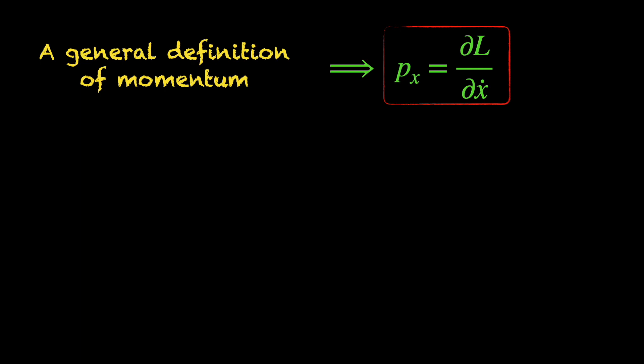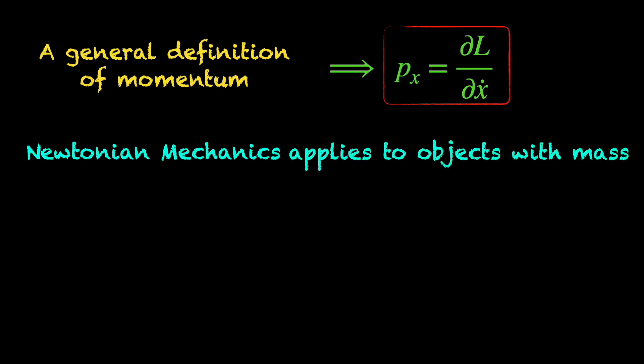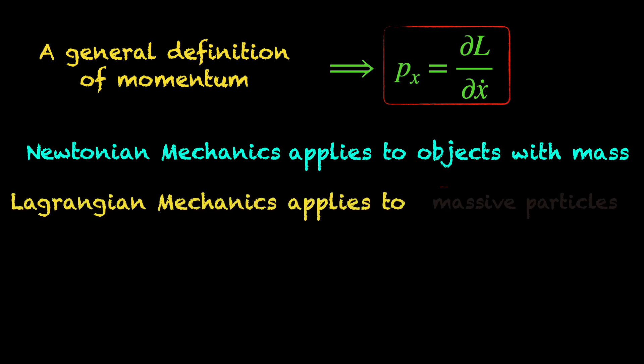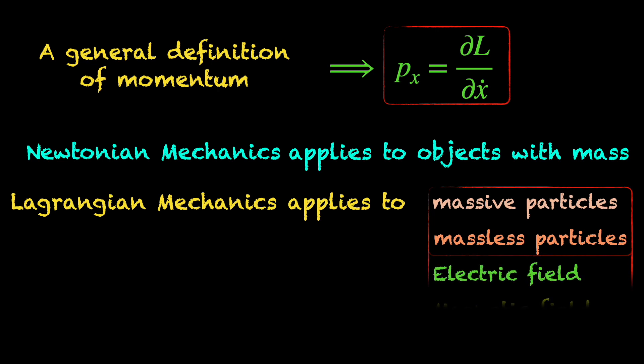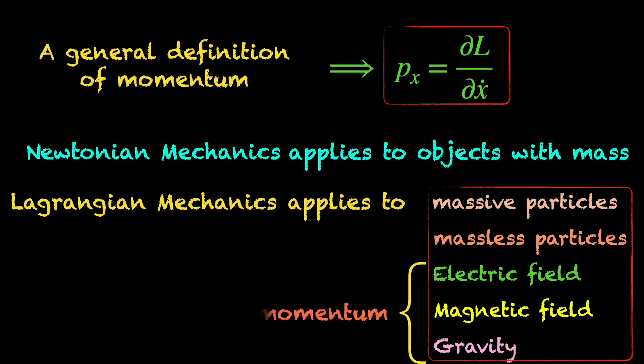Why is this general definition important? Because of its applicability to systems which are beyond the scope of Newtonian mechanics. Newton's laws of motion can only tell us how massive objects behave under a given force. But Lagrangian mechanics provides an algorithm that not only applies to massive and massless objects, but can also be generalized to accommodate fields like the electric and magnetic and gravitational fields. So, from the Lagrangian of these fields, we can find out their momentum even though they do not have mass, so to speak.